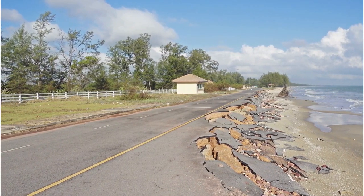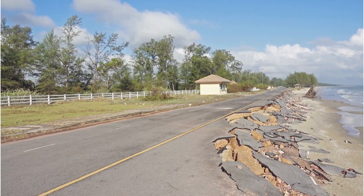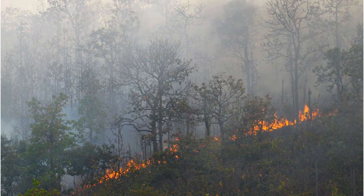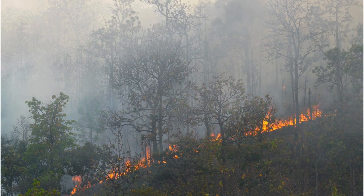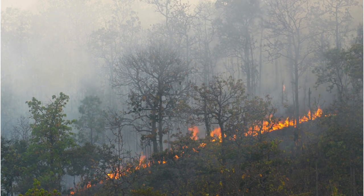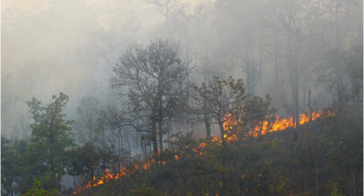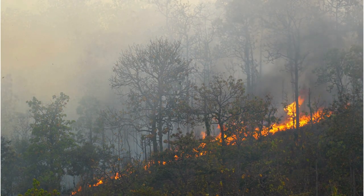Students investigate First Nations Australians' valuable contributions in creating sustainable products, environments and services. Content in humanities and social sciences supports students' development of their world views and explores ways people use, allocate and manage Earth's renewable and non-renewable resources sustainably. Students learn about the interconnectedness of people with each other and the environment and how First Nations Australians care for country and place. Teaching and learning activities involve identifying the importance of water for sustaining the environment and people, and investigating the use of fire by First Nations Australians to manage and protect natural resources.